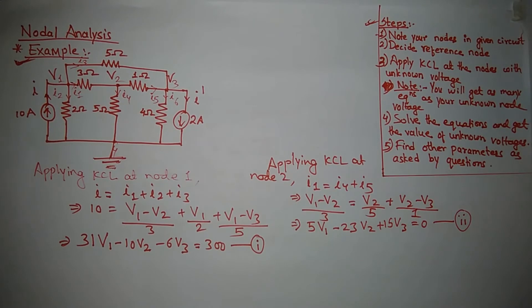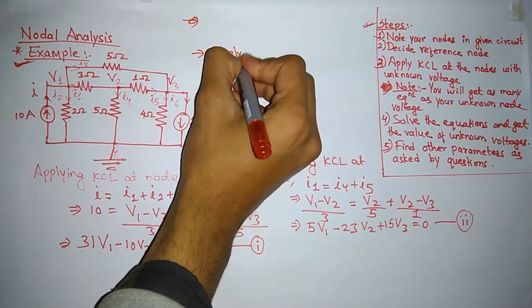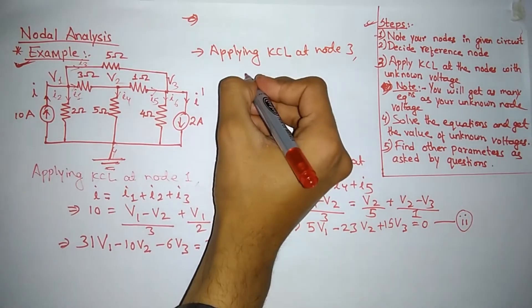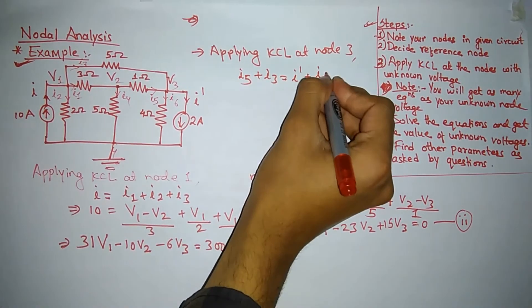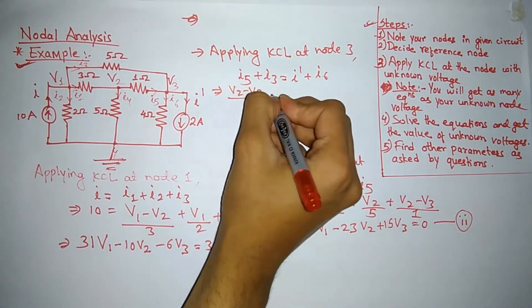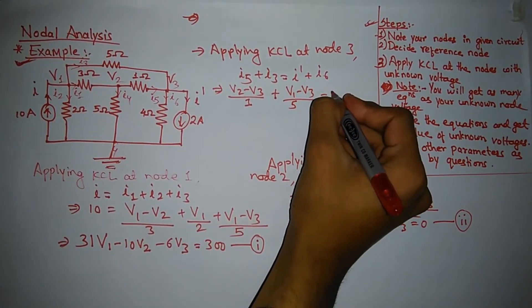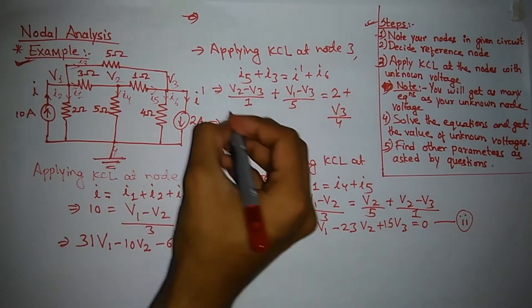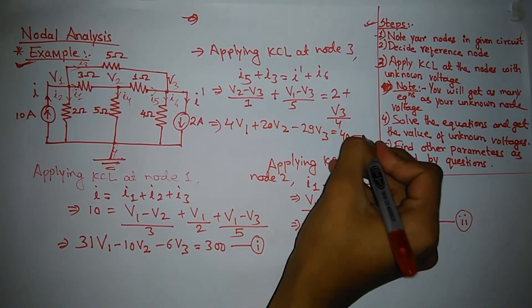Now similarly, applying KCL at node 3. Here I5 plus I3 is equal to I dash plus I6. I5 is equal to V2 minus V3 upon 1, plus I3 is equal to V1 minus V3 upon 5, is equal to I dash which is 2, plus I6 is equal to V3 by 4. On doing mathematics you will get the equation: 4V1 plus 20V2 minus 29V3 is equal to 40. This is your equation 3.